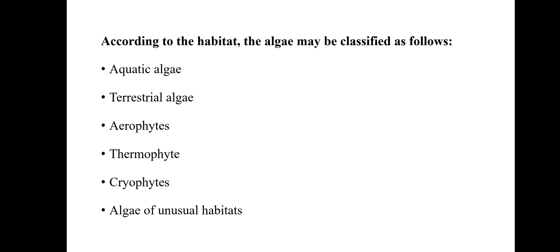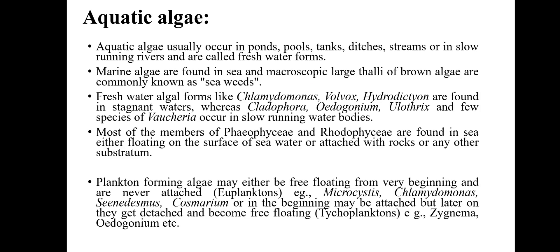According to their habitat, algae may be classified as: aquatic algae, terrestrial algae, aerophytes, thermophytes, cryophytes, and algae with unusual habitat. First, aquatic algae — these are algae which live in aquatic ecosystems. They may be freshwater or marine. Marine algae are generally called seaweeds.